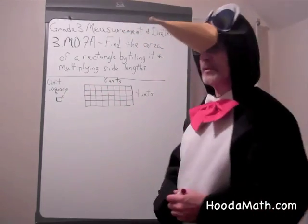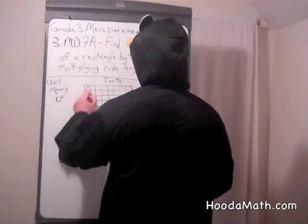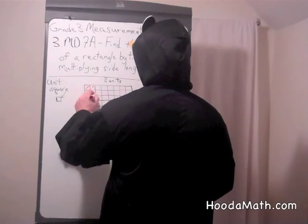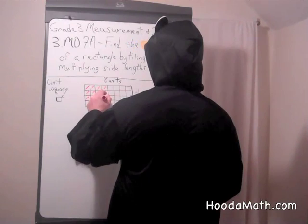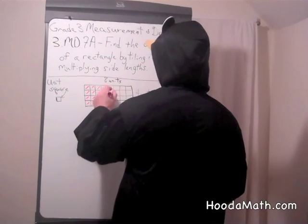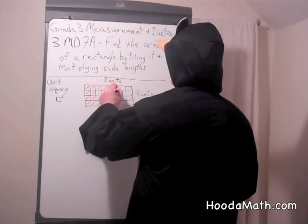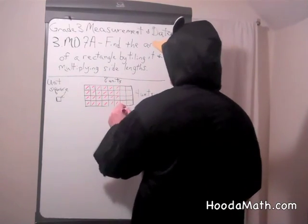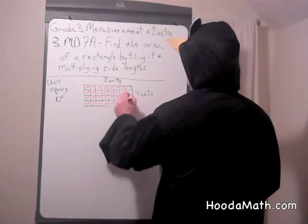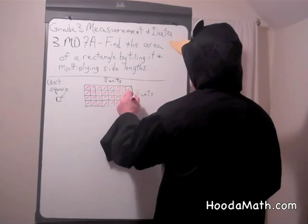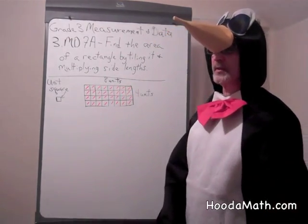That would tell us the area. So, if we count: 1, 2, 3, 4, 5, 6, 7, 8, 9, 10, 11, 12, 13, 14, 15, 16, 17, 18, 19, 20, 21, 22, 23, 24, 25, 26, 27, 28, 29, 30, 31, 32. So one way is to tile it.